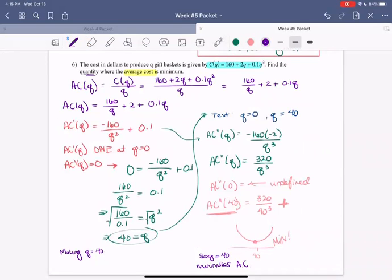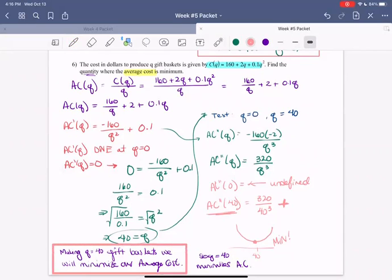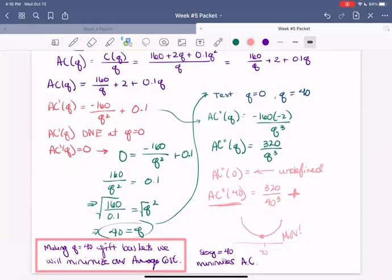When making Q equals 40 gift baskets, we will minimize our average cost. Excellent. And there we go. All right. Thank you for watching, everyone. Great work.